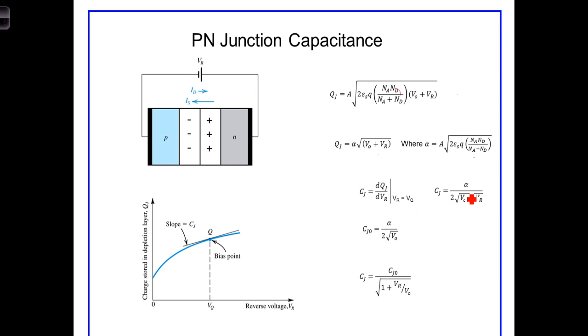That then gives us alpha over 2 times the square root of that sum term. We can define another constant C sub J zero as just alpha over 2 times the square root of V zero to emphasize this dependence on V sub R.